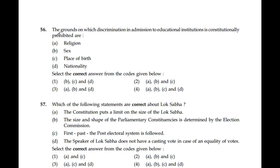Question number 56: The grounds on which discrimination in admission to educational institutions is constitutionally prohibited are religion, sex, place of birth, and nationality. Nationality is not included here. The correct answer is option 2: A, B and C only.